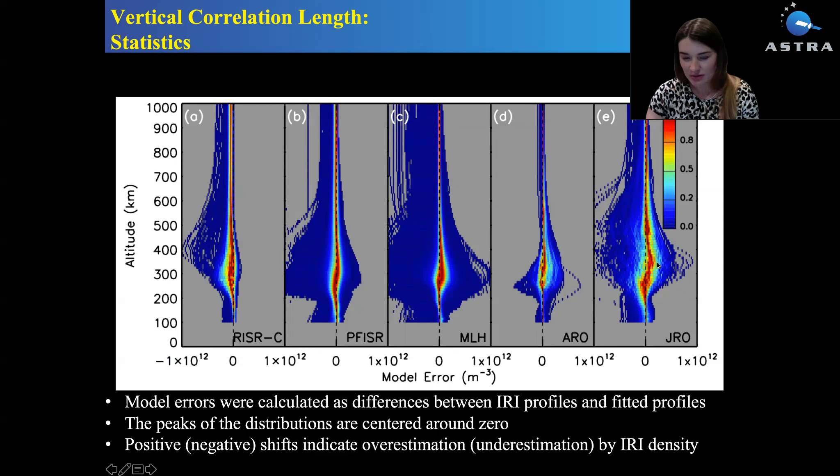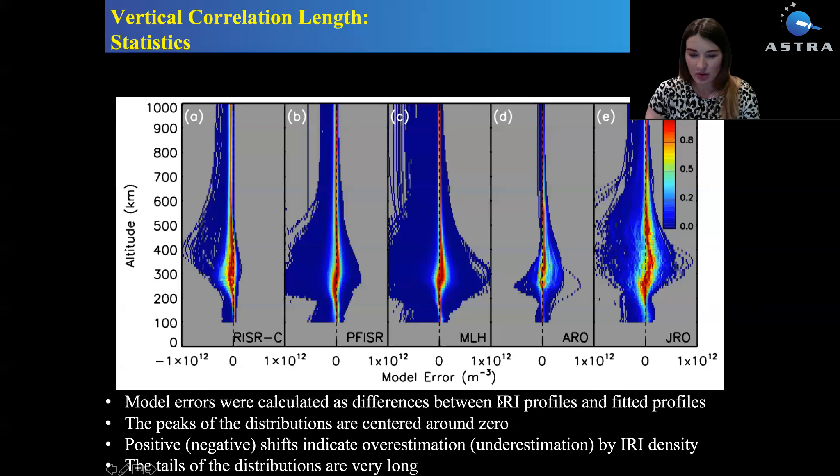But for example, for Arecibo, the density is always underestimated by IRI. The tails are also pretty long of the distributions. They reach 1 to the 10 to the 12th electron per meter to the negative third.